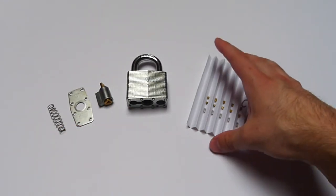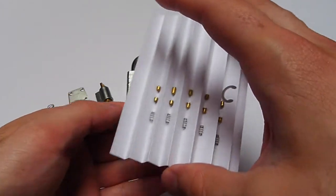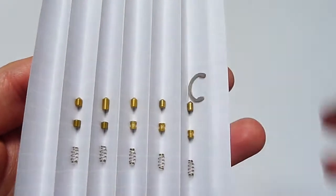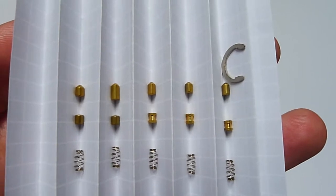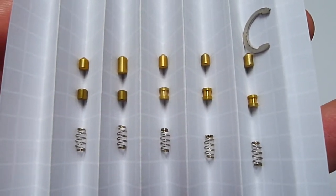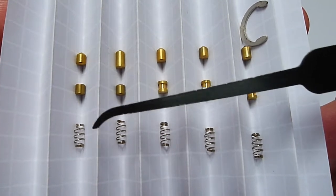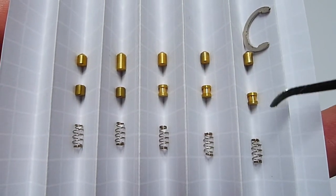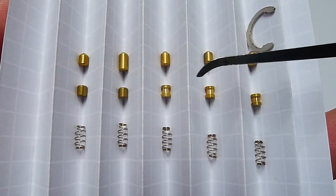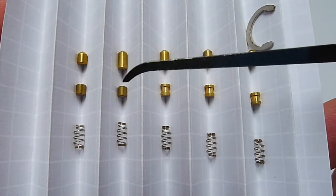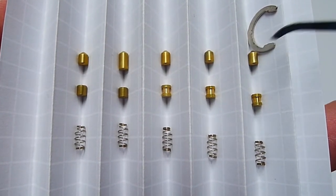Here we got the pins and let's take a look at the pins and evaluate why Bill had problems getting feedback there. First of all what do we have here? We have all stainless steel springs, then we got three spooled driver pins, two normal driver pins and then all normal key pins.